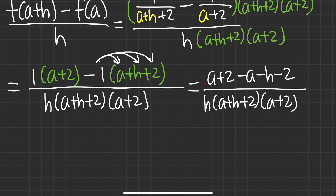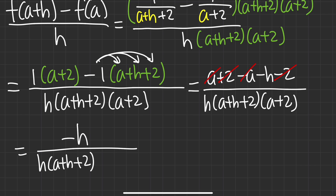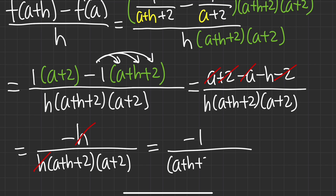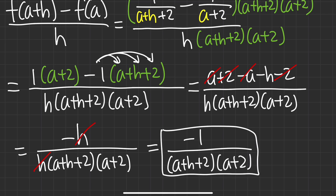After combining: a minus a and 2 minus 2 cancel, leaving just negative h over the denominator. Cancel the h, giving negative 1 on top. The final answer is negative 1 over a plus h plus 2 times a plus 2. Keep the denominator factored — no need to multiply it out — and we are done.